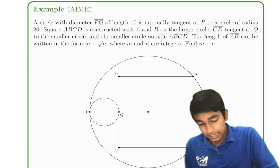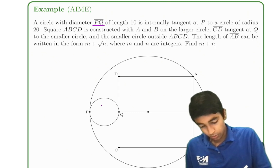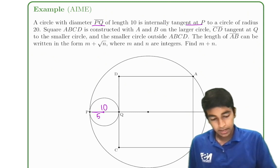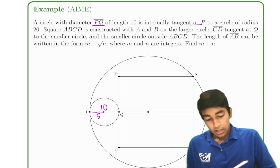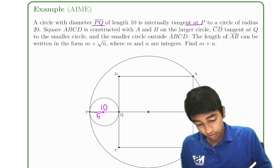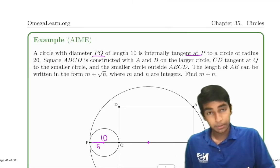A circle with diameter PQ of length 10, so radius 5, is internally tangent at P to a circle with radius 20. So this circle has a radius 20. So we're going to use this technique: draw all important radii.